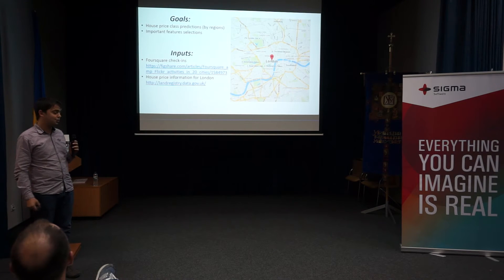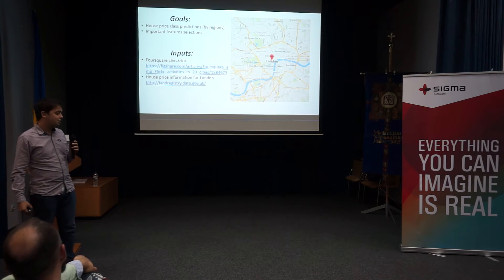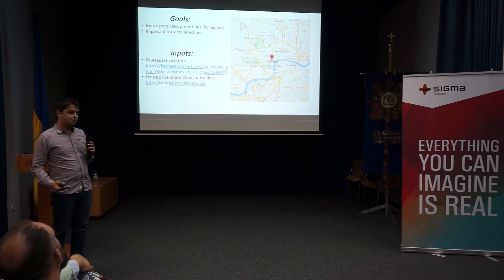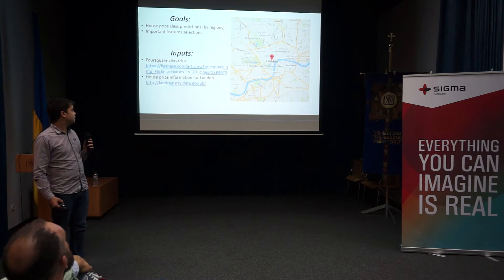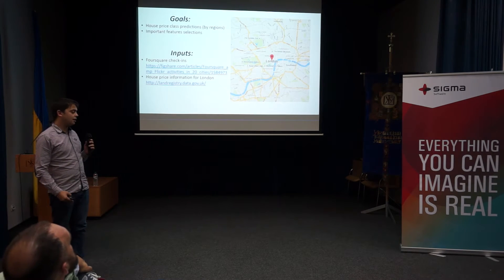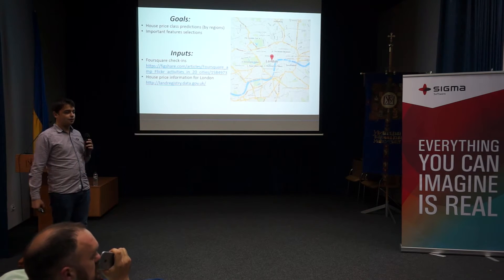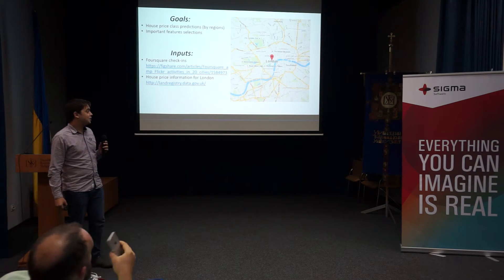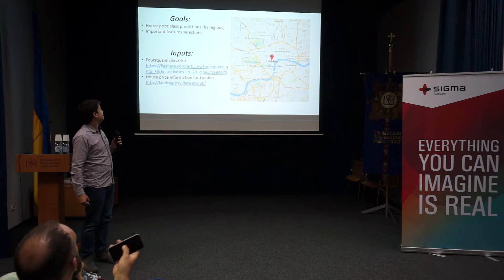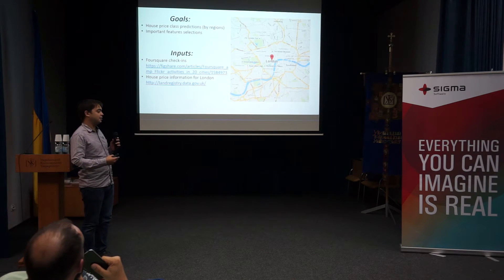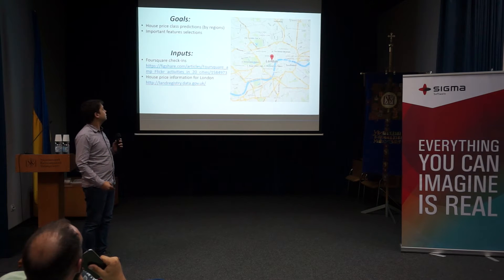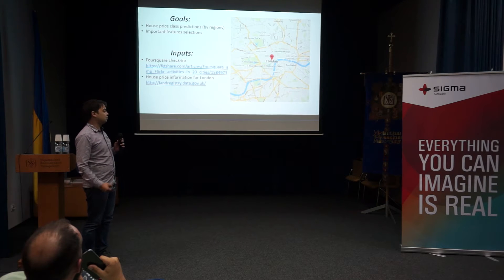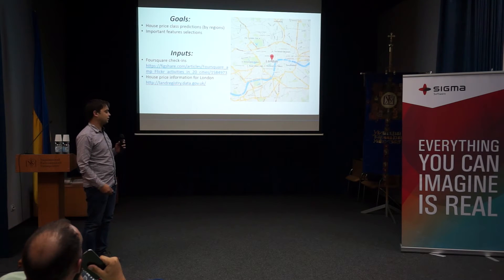We get inputs from Foursquare about user check-ins in different places, and we get input from open data from London house selling prices. We tried to reach some goals: to predict the price class for local regions based on these Foursquare check-ins and to identify the important features from our model.